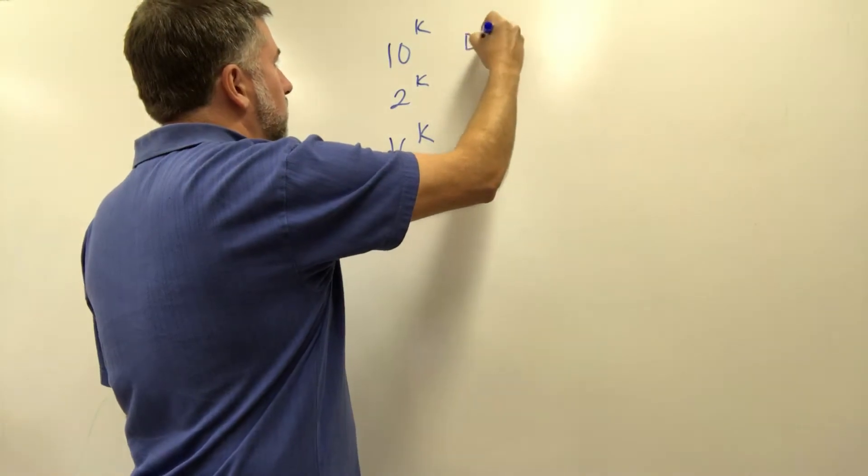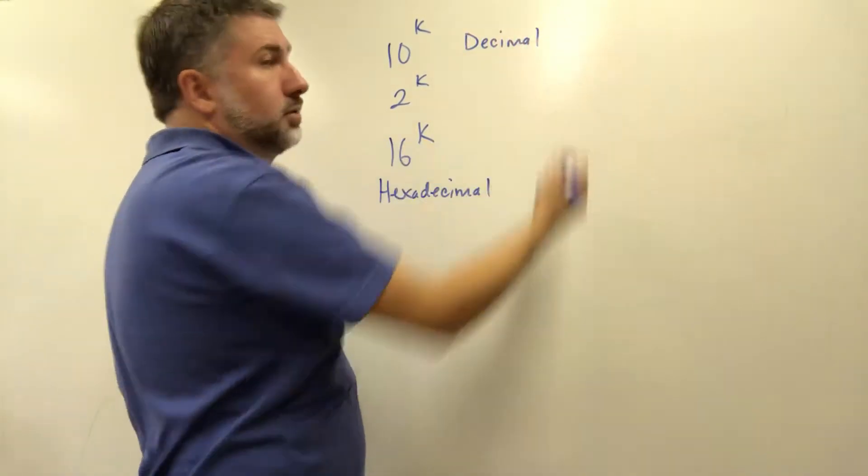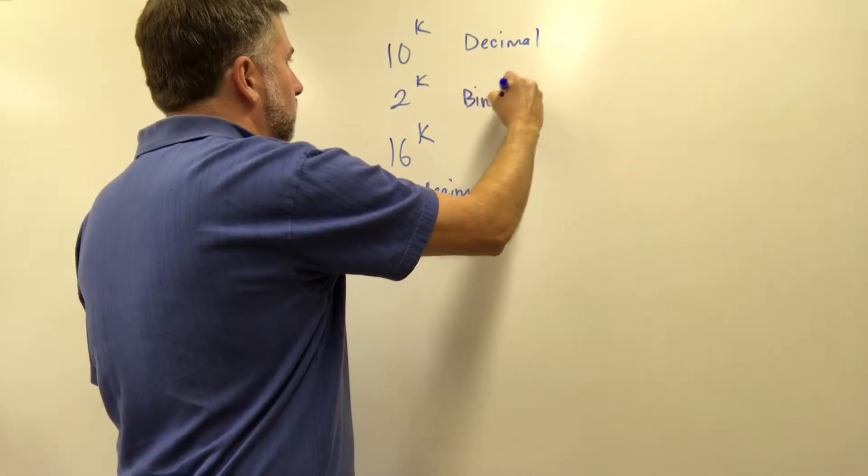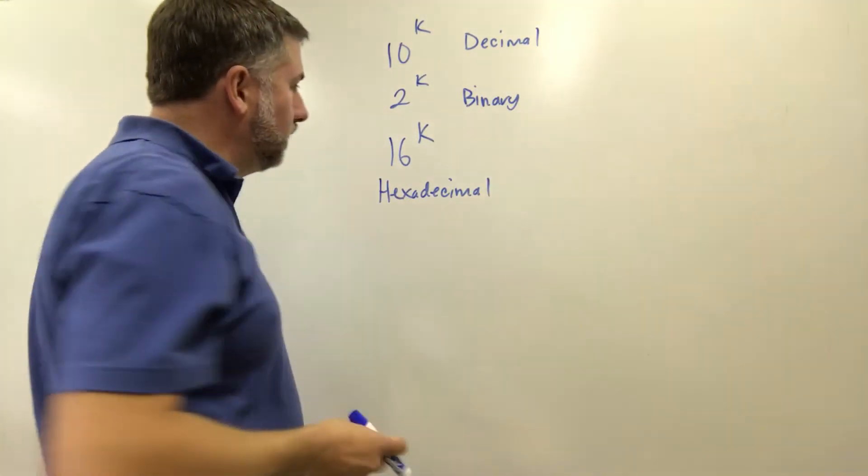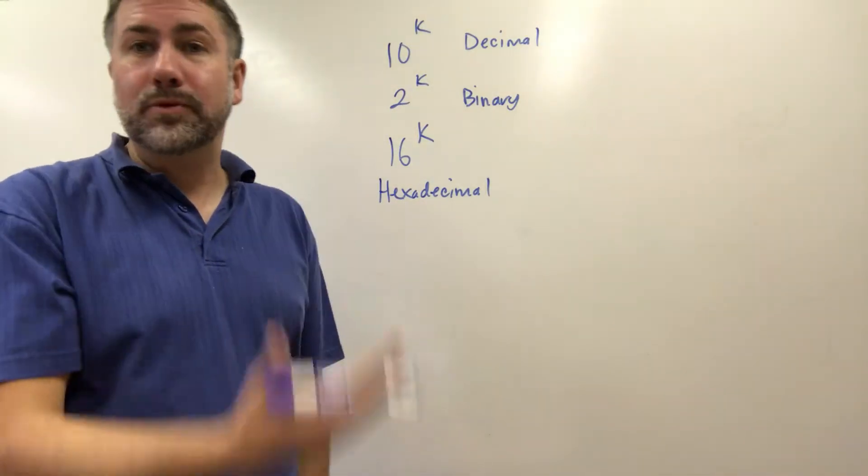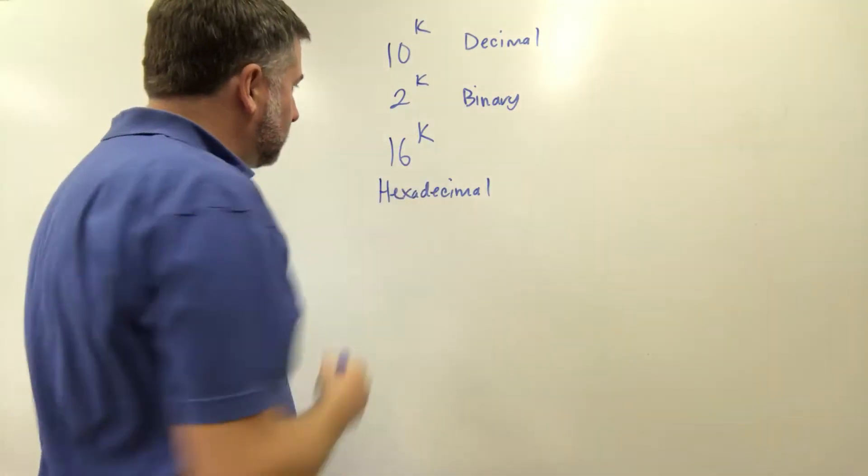So this is decimal or base ten. This is binary or base two and sixteen is hexadecimal. So we need sixteen symbols in order to represent a base sixteen number.